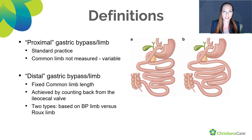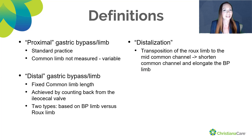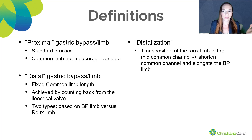The distal bypass has a much longer Roux limb and BP limb with a much more distal jejunojejunal anastomosis. Distal gastric bypass should not be confused with distalization. Distalization is the transposition of the Roux limb more distally into the small bowel, creating a short and fixed common channel length that will also thereby elongate the BP limb.